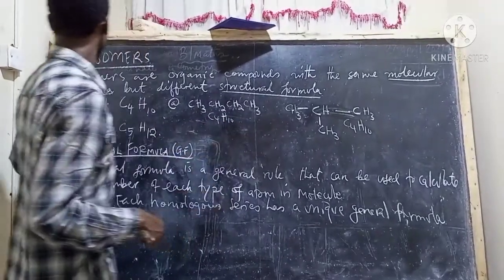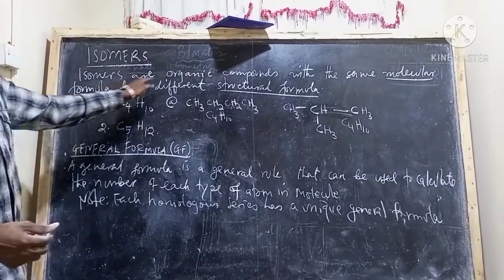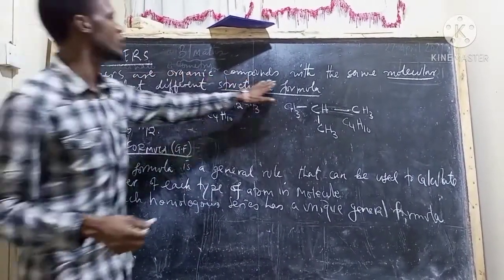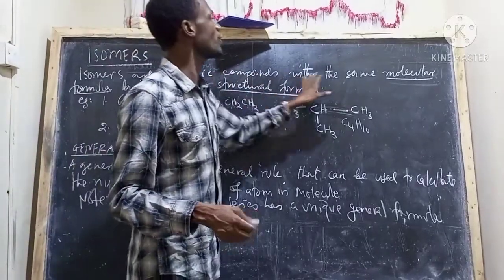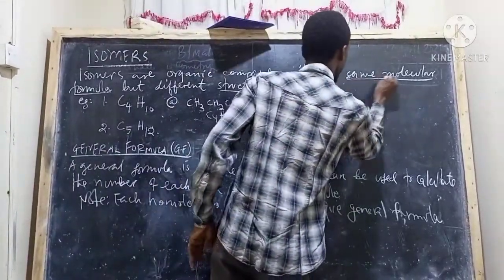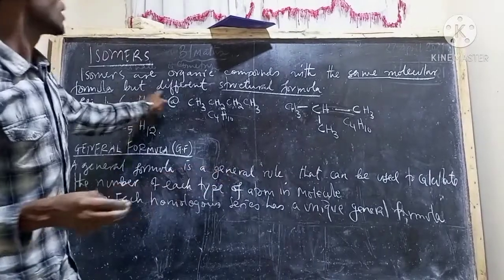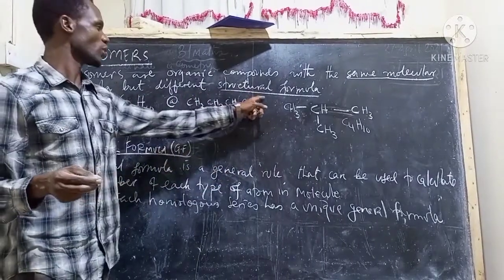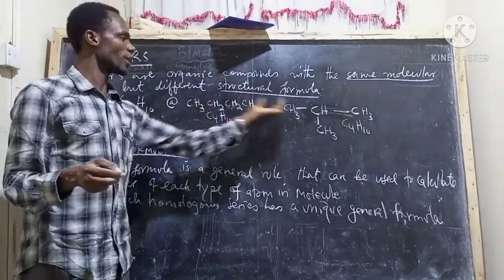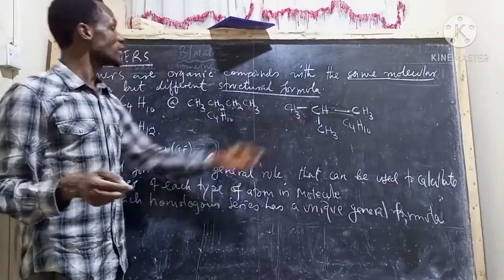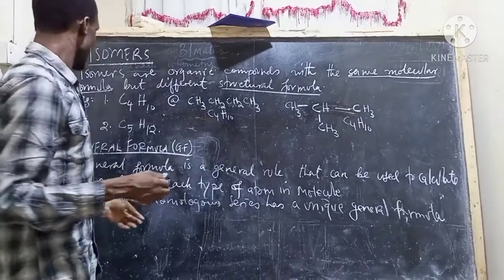That is why we say isomers are organic compounds with the same molecular formula but different structural formula — the structural formula is different, but the molecular formula is the same.